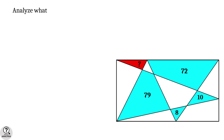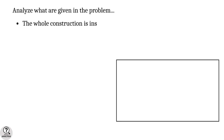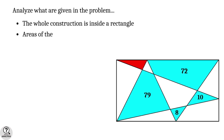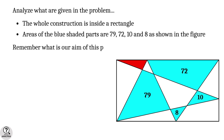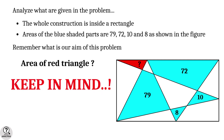The solution is right here. First, let's analyze what is given in the problem. The whole construction is made inside a rectangle, and the areas of the blue colored parts are given as 79, 72, 10, and 8 square units as shown in the figure. Our aim is to find the area of the red color triangle. Keep this in mind before moving forward.